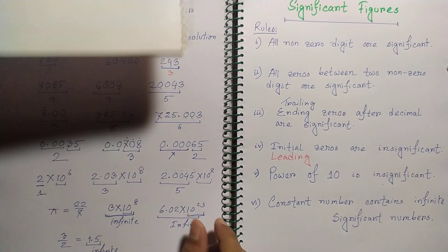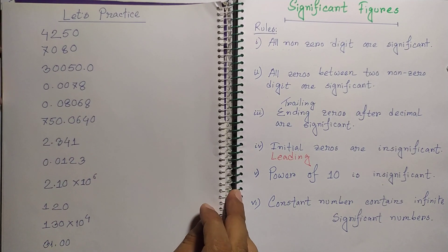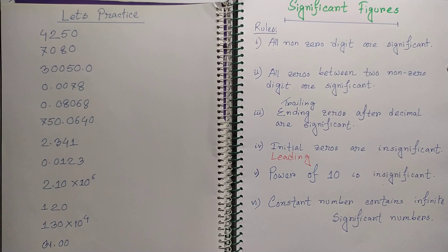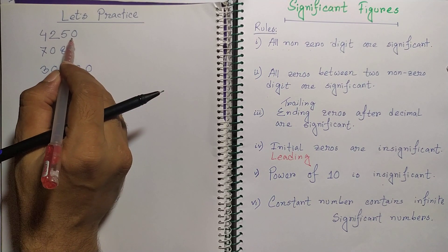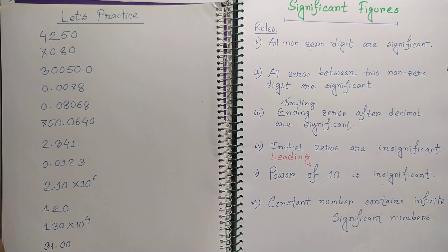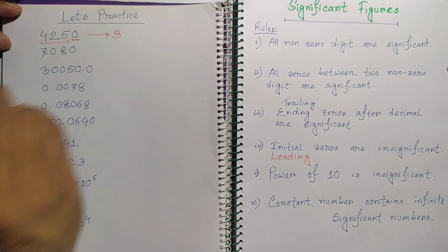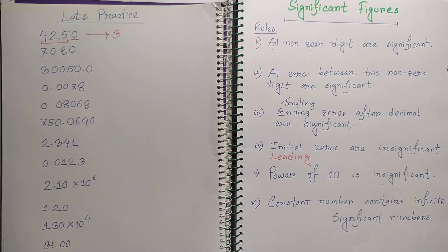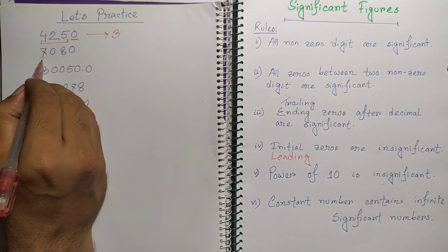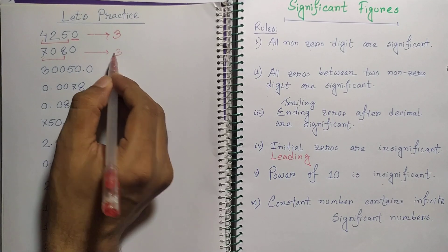Let's practice. For 4,250: the trailing zero has no decimal point after it, so it is not counted. We have 3 significant figures. For 7,08 (zero between 7 and 8): the zero is between two non-zero digits, so we have 3 significant figures.